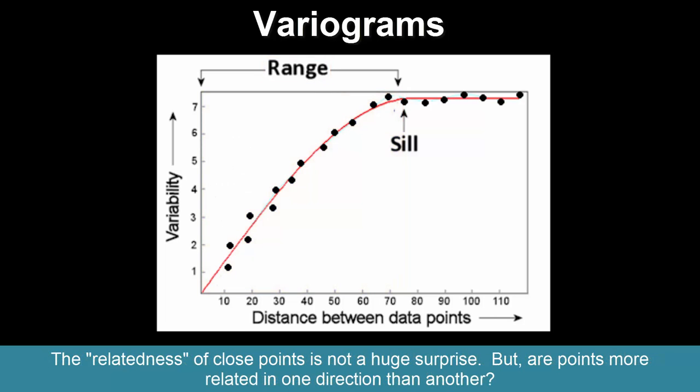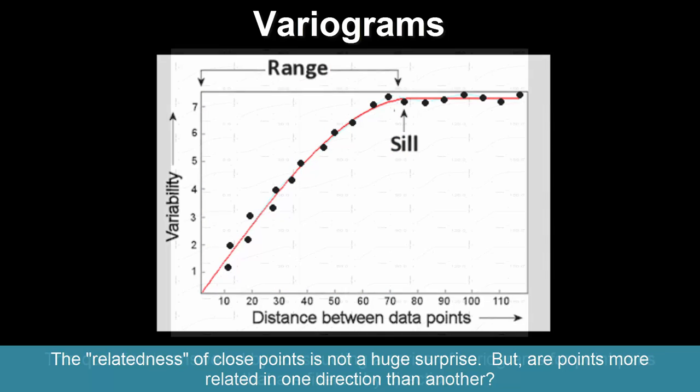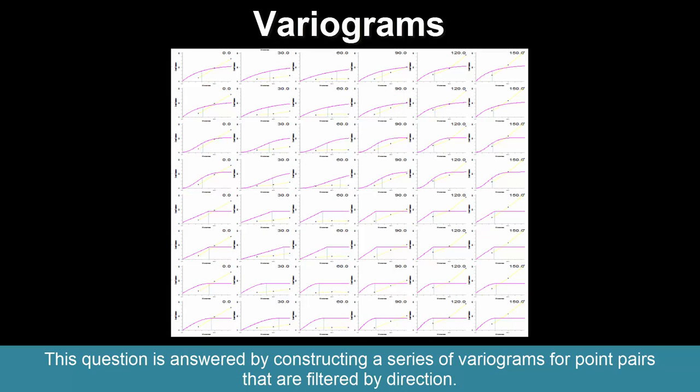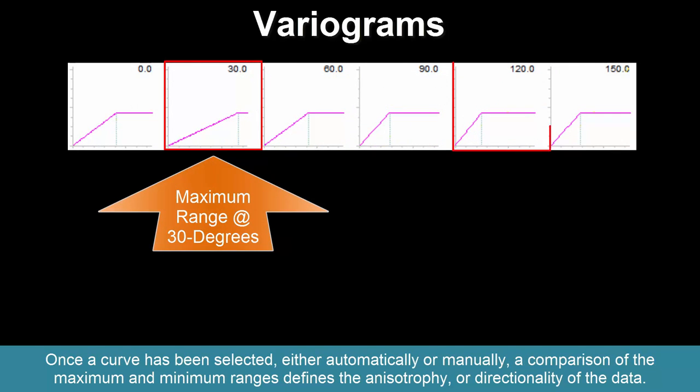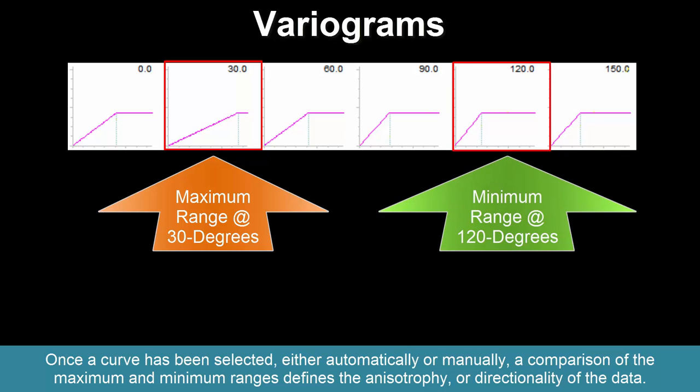The relatedness of close points is not a huge surprise, but are points more related in one direction than another? This question is answered by constructing a series of variograms for point pairs that are filtered by direction. Once a curve has been selected, either automatically or manually, a comparison of the maximum and minimum ranges defines the anisotropy or directionality of the data.